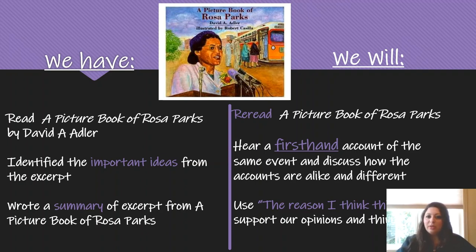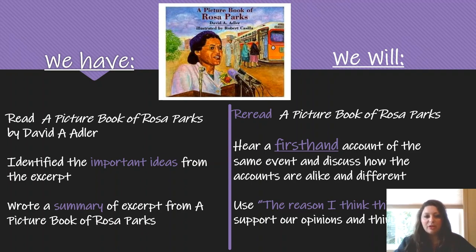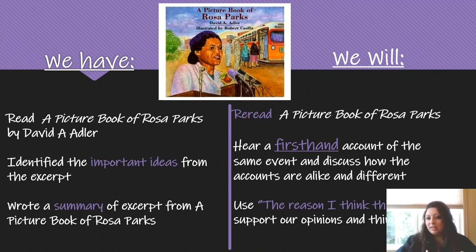Today we're going to reread a piece of that, we're going to hear a first-hand account of the same event, and we're going to discuss how the accounts are alike and different. We're still going to practice using, when you're giving your opinion, the stem 'the reason I think this is.' So whenever you have your opinion, you can say why — 'in the text it said' or 'the reason I think this is because I read in the text, or I know that.' We want to keep practicing using that stem so we can support our opinion with evidence from the text.